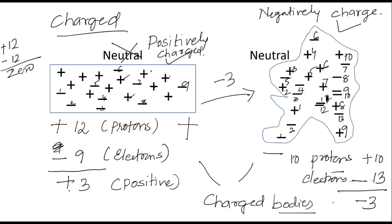How do you charge the bodies? Just by rubbing. The same thing happens in the atmosphere. Clouds get rubbed — there will be a breeze — and water vapor molecules get rubbed against each other. When they rub, they become charged. These are electric charges.